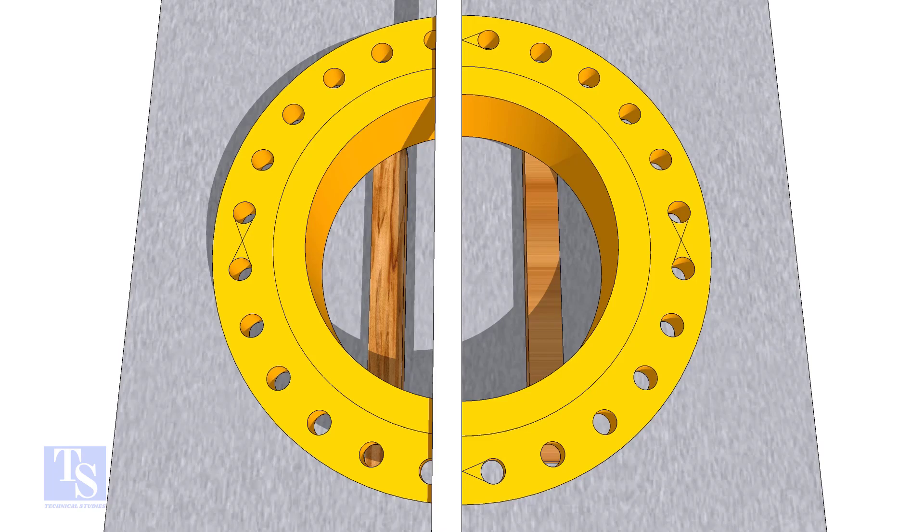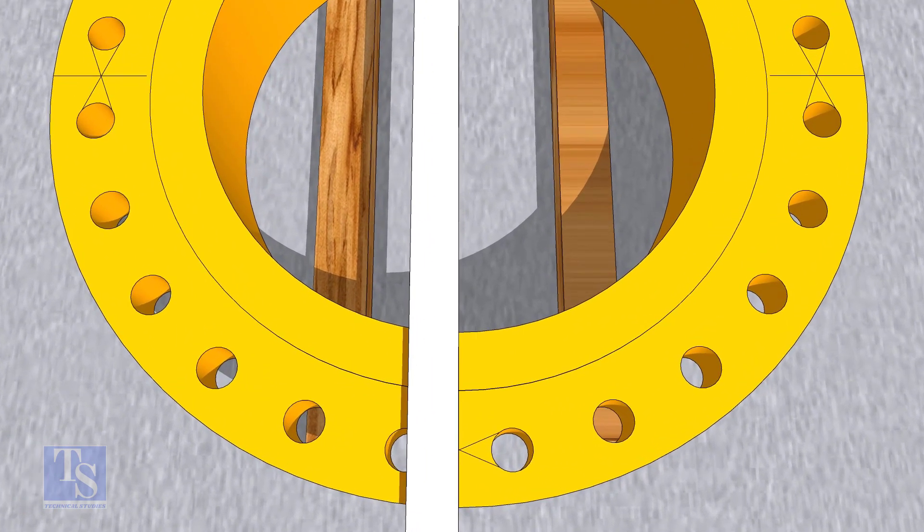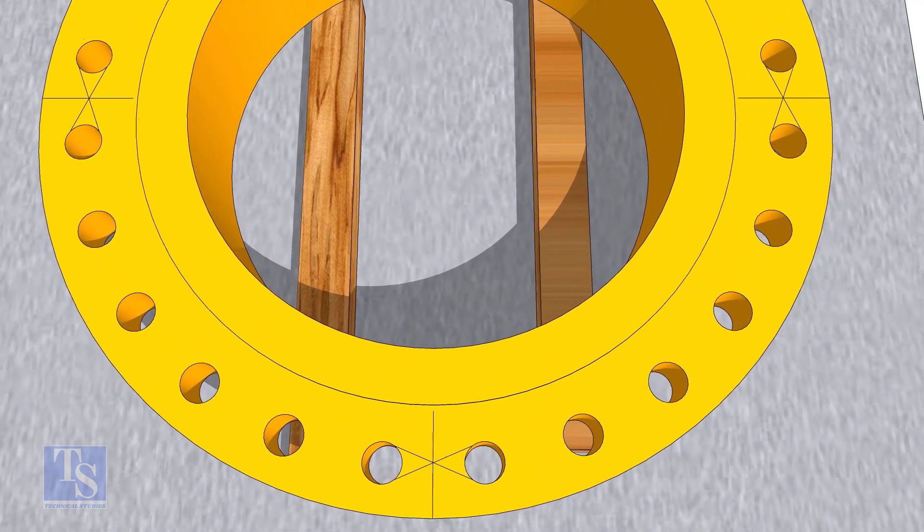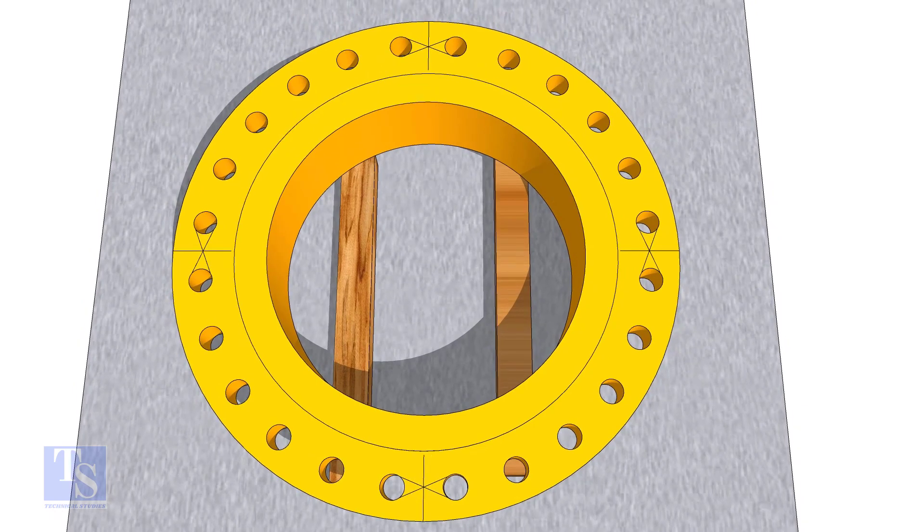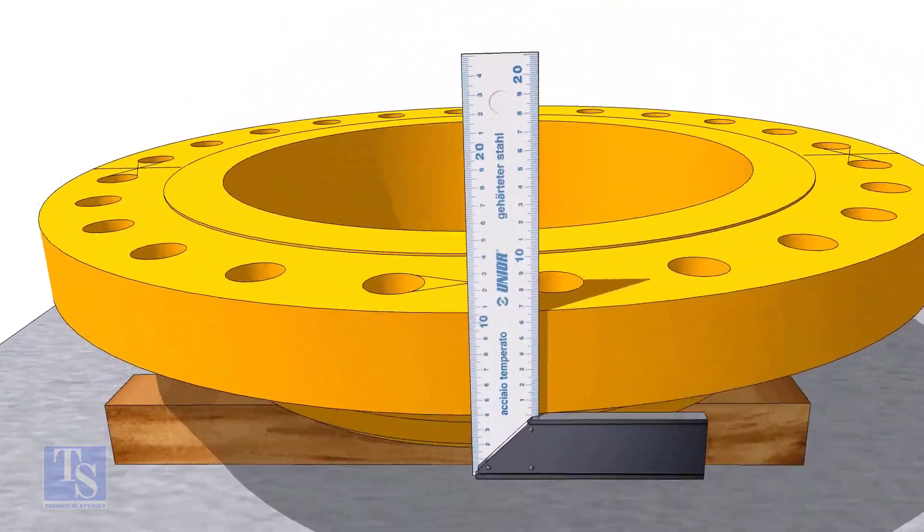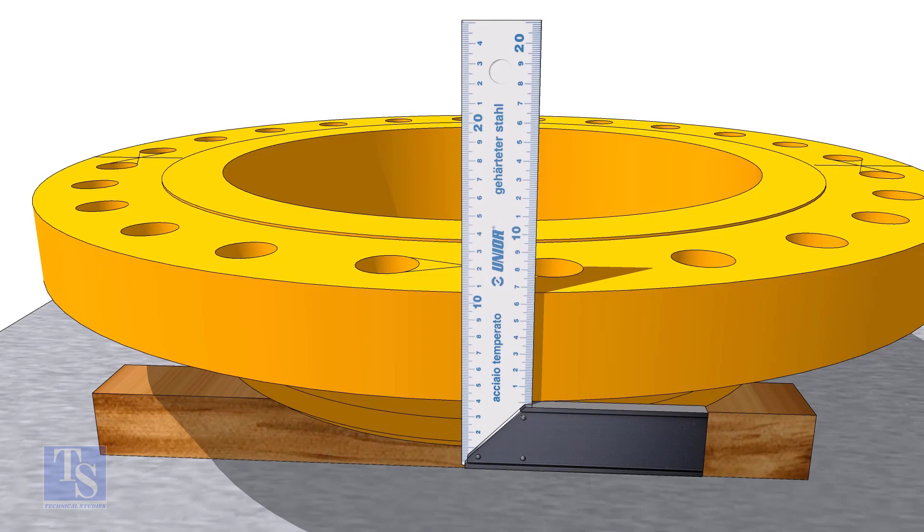Draw lines on the flange face centering these two intersections. Never forget to punch mark the center lines when you fit up flanges on a concentric reducer. Transfer these center lines on the circular face also.